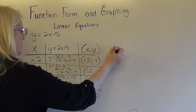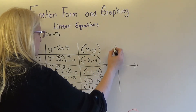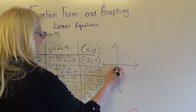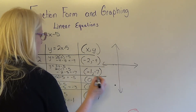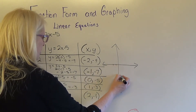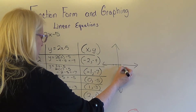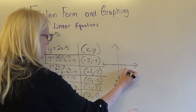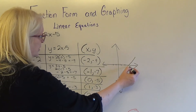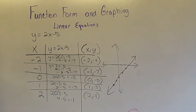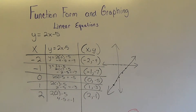So if we were going to graph this — negative 2 down to negative 9, then negative 1 down to negative 7, then 0 at negative 5, then 1 at negative 3, and 2 at negative 1. If I connect all of these dots, I have the line for this equation. Let's try a couple more.